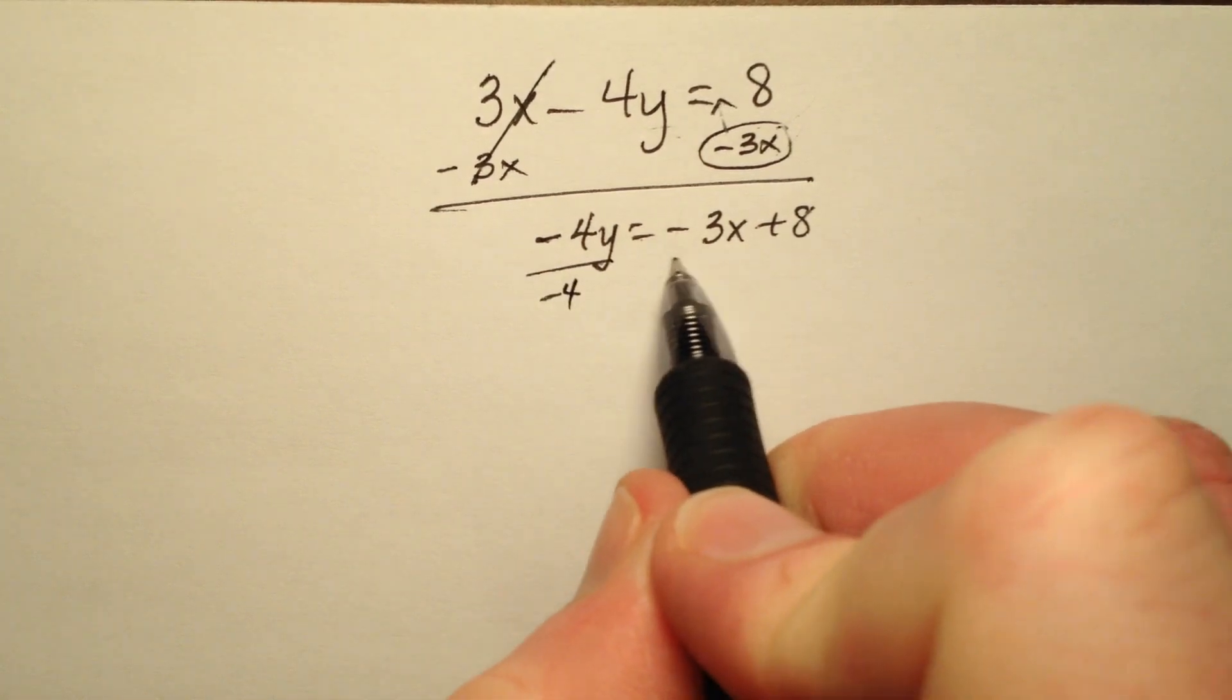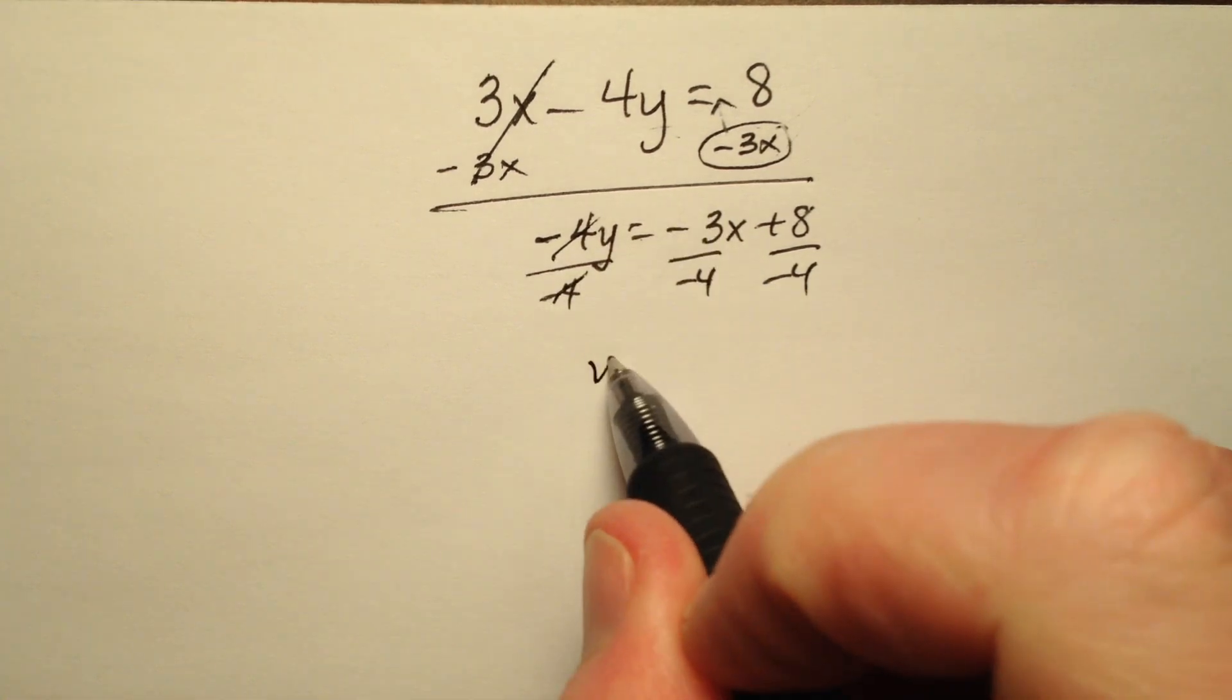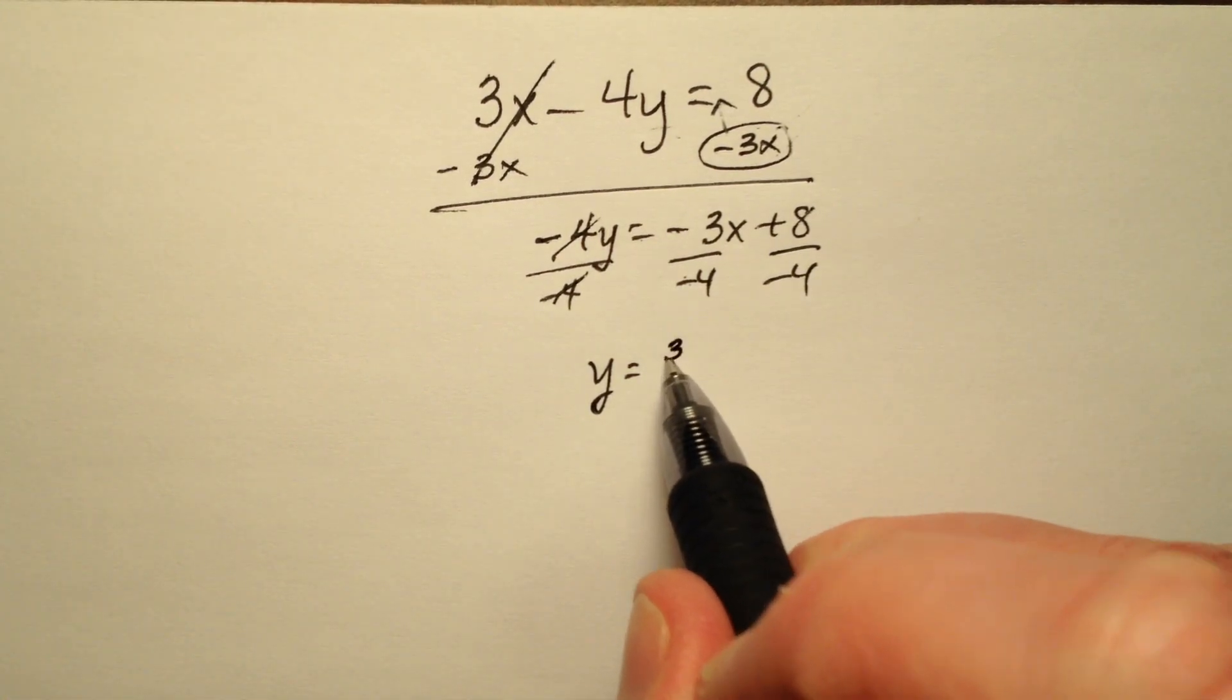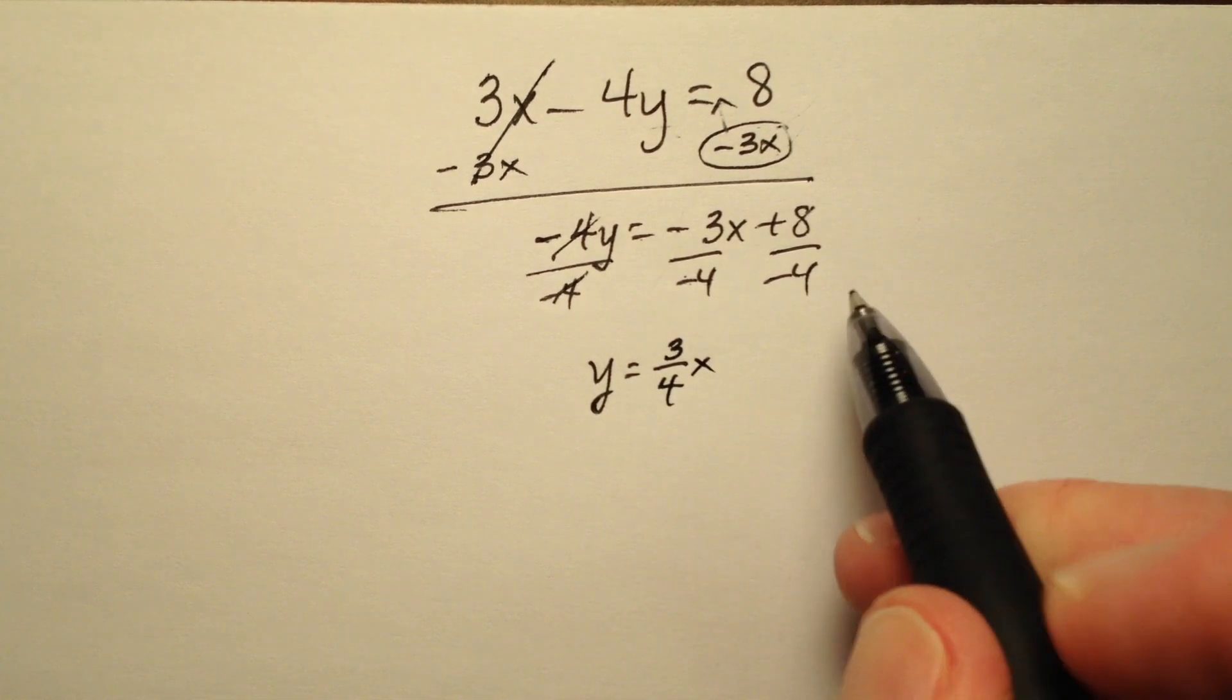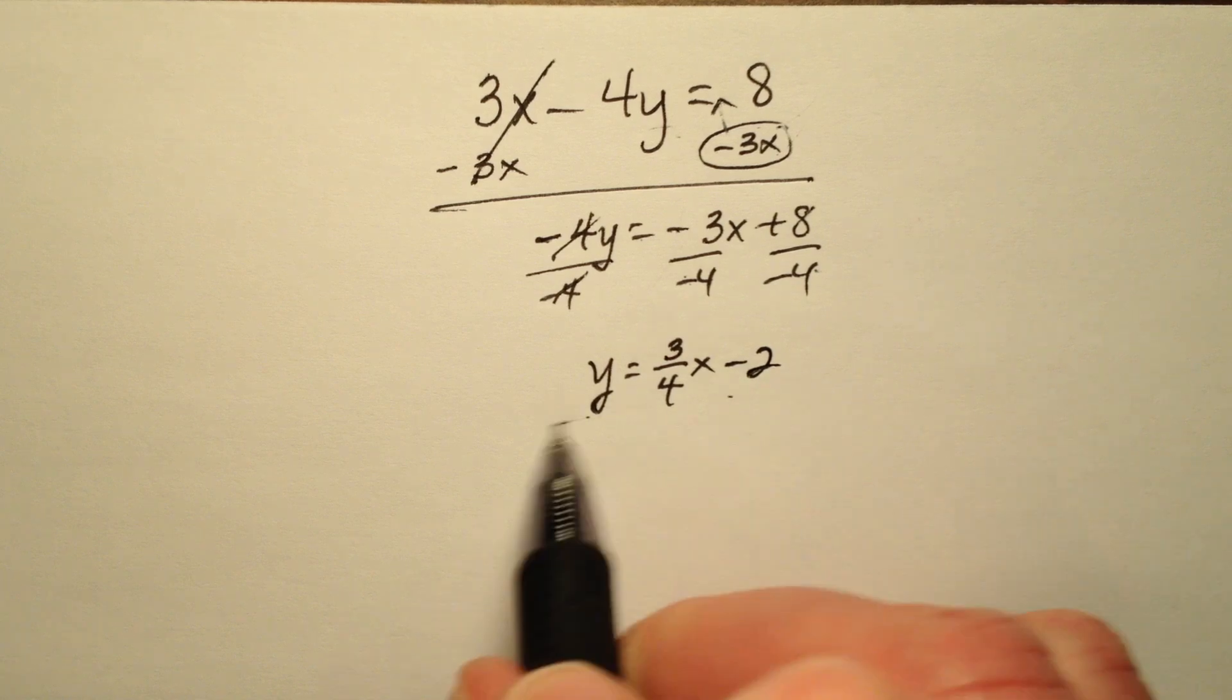And then I'm going to go ahead and divide every single term by negative 4. So I have y equals, then two negatives cancel to make positive 3 fourths x, and then positive 8 divided by negative 4 will be negative 2.